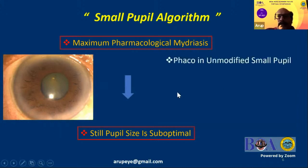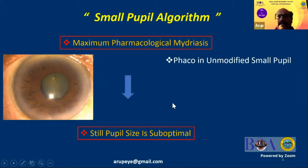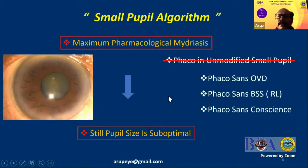When I peruse the program booklets and I see topics like FACO in unmodified small pupil, FACO sans OVD, FACO sans BSS — I feel it is just FACO sans common sense.